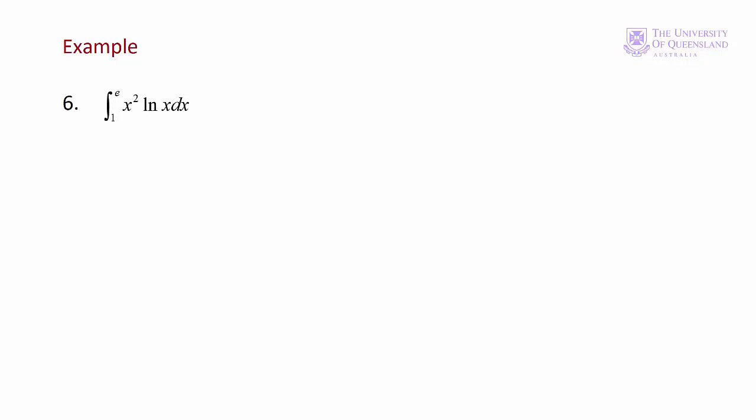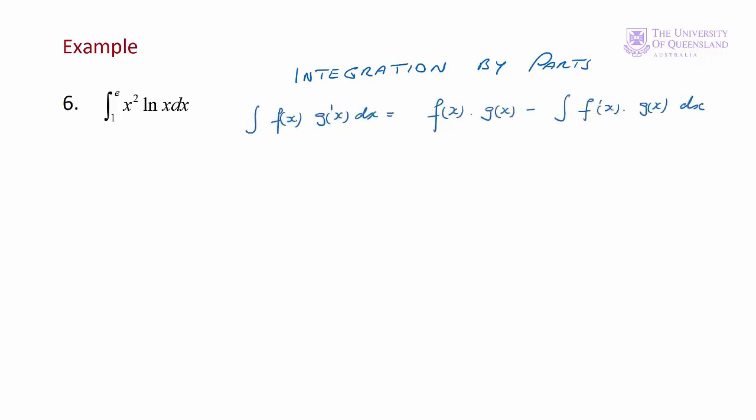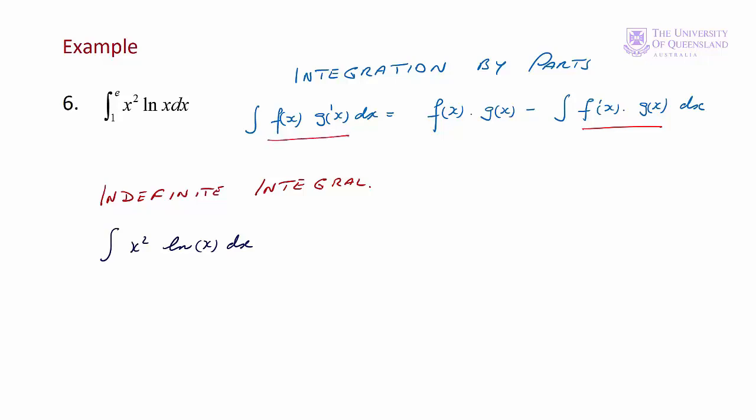In example 6 we'll use integration by parts. We have a definite integral, evaluating from 1 to e. We'll do it in two stages — first finding the indefinite integral. The purpose of integration by parts is to end up with a simpler integrand. We're looking at our product and thinking about one term being f(x) and the other being g'(x). In this case one of the terms is log(x), and the first derivative of log(x) is 1/x, which should simplify things.